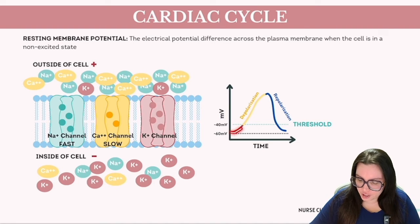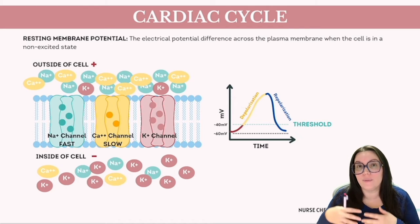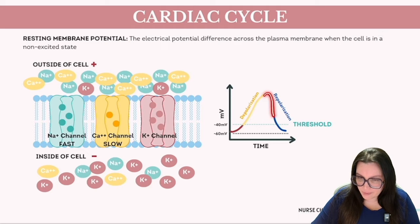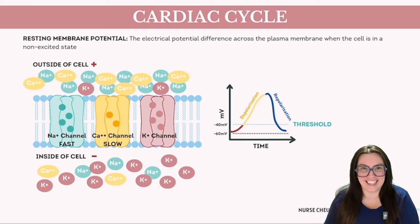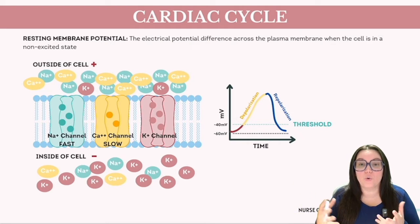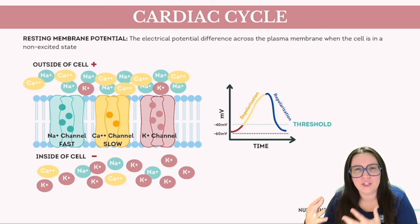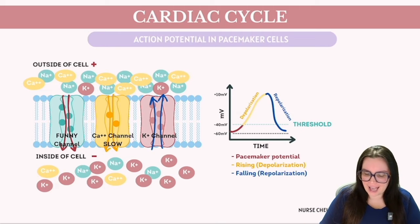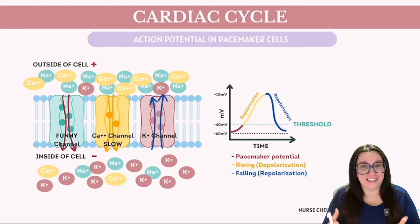When membrane voltage rises and becomes less negative, this reduction in polarization is called depolarization. Conversely, an increase in the negative membrane potential is referred to as repolarization. The initiation of an action potential requires the membrane voltage to depolarize to a specific critical level, known as the threshold.